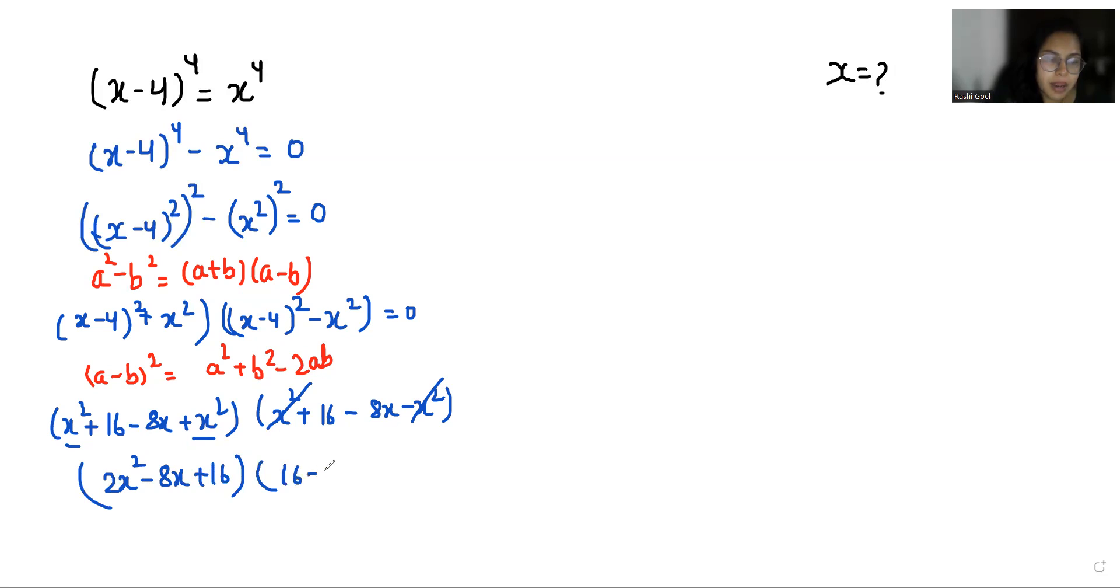And here 16 - 8x equals zero. So now we have two cases: either 16 - 8x = 0, which gives 16 = 8x, so 16/8 = x, therefore x = 2.